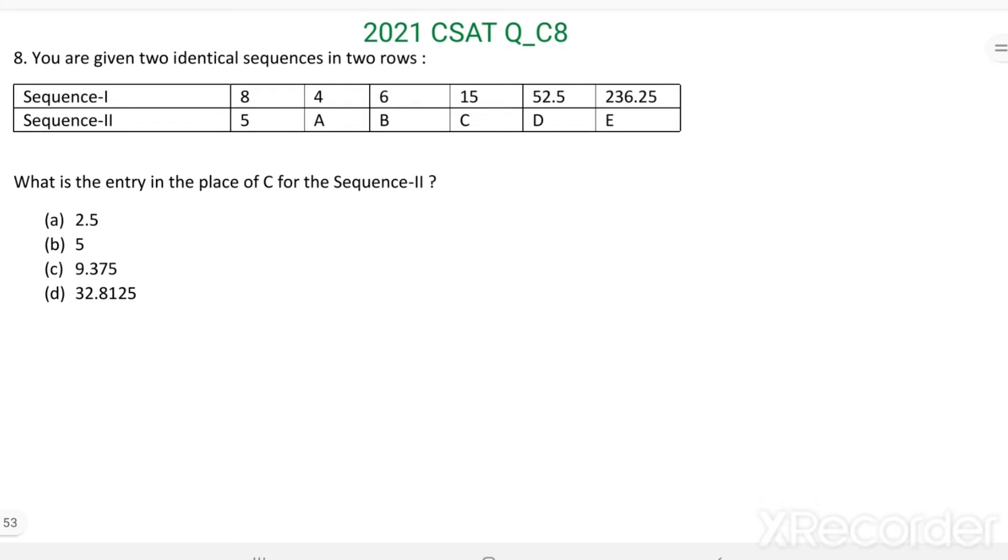For Sequence 1, all the entries are given: 8, 4, 6, 15, 52.5, 236.25.